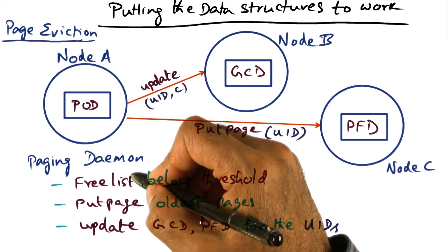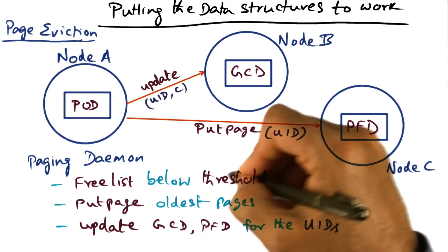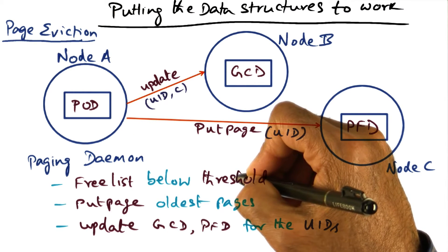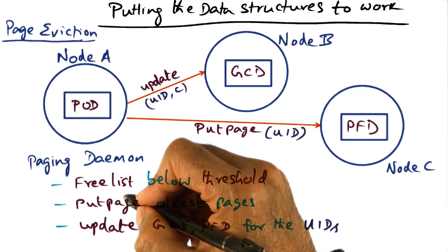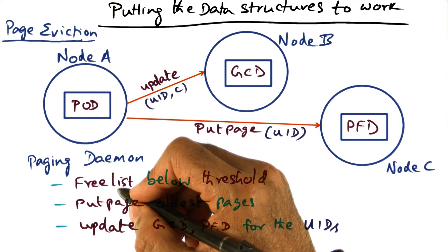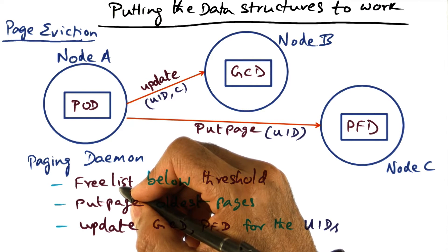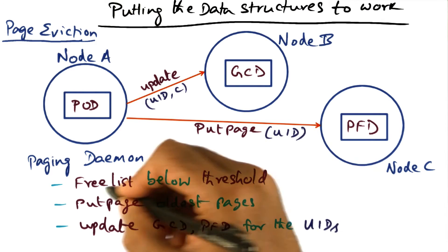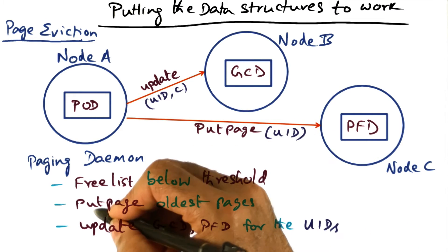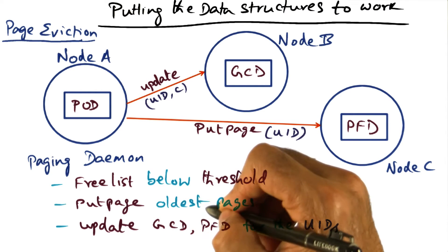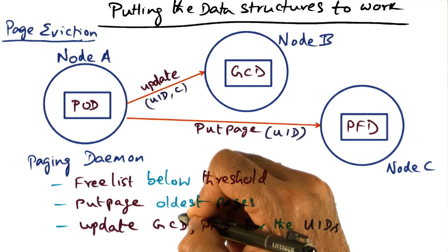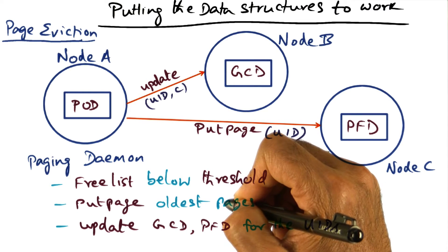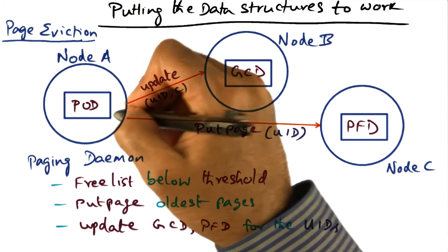Normally, what the paging daemon would have done is: when the free list goes below a threshold, it would take a bunch of LRU candidate pages and put them out onto the disk. But with the integration with GMS, what the paging daemon is going to do is, for the same condition — when the free list falls below a threshold — it's going to do put_page of the oldest pages that it has on this node.